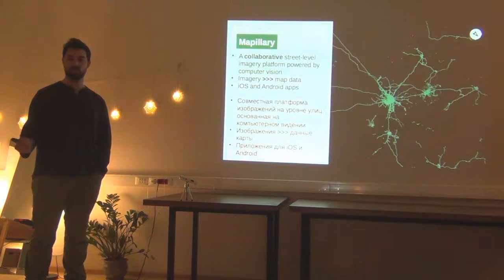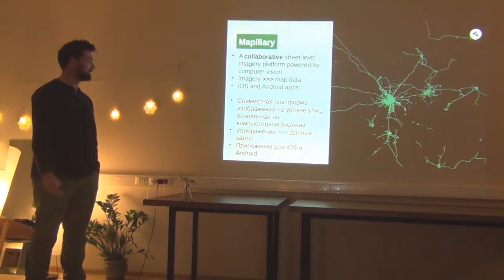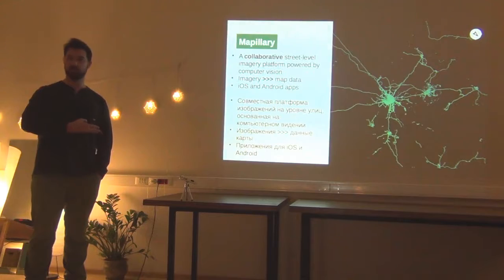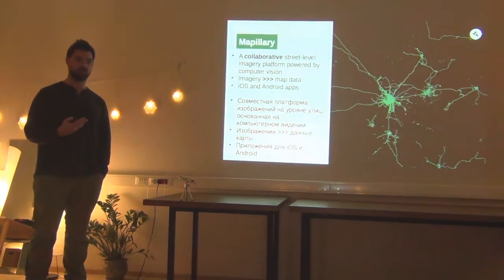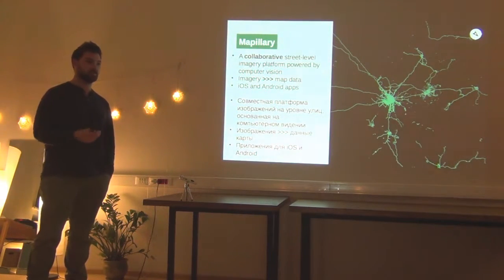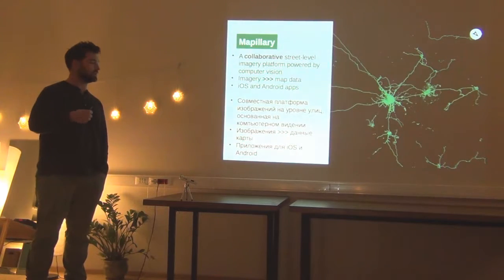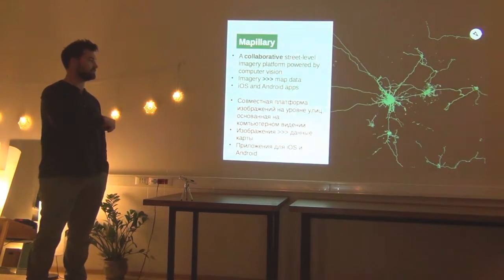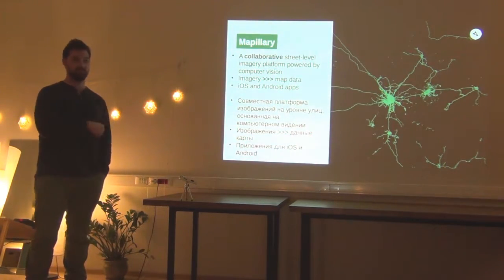We have applications for Android and iOS. When you upload imagery to Mapillary, we use a computer vision algorithm — AI — to analyze for objects in the images, and these become map data.